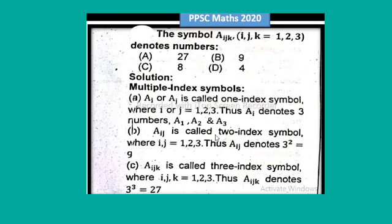A_ij is called two-indexed symbol, where i, j is equal to 1 to 3. Thus A_ij denotes three power two is equal to nine.